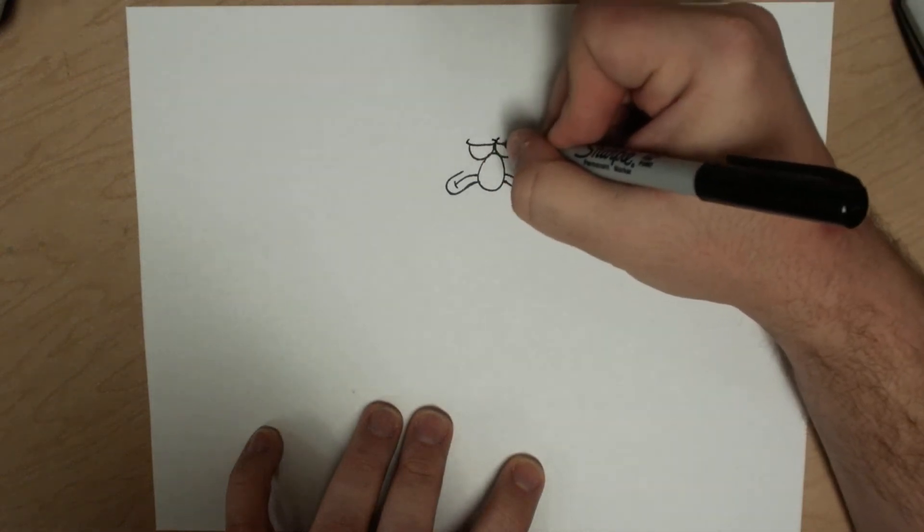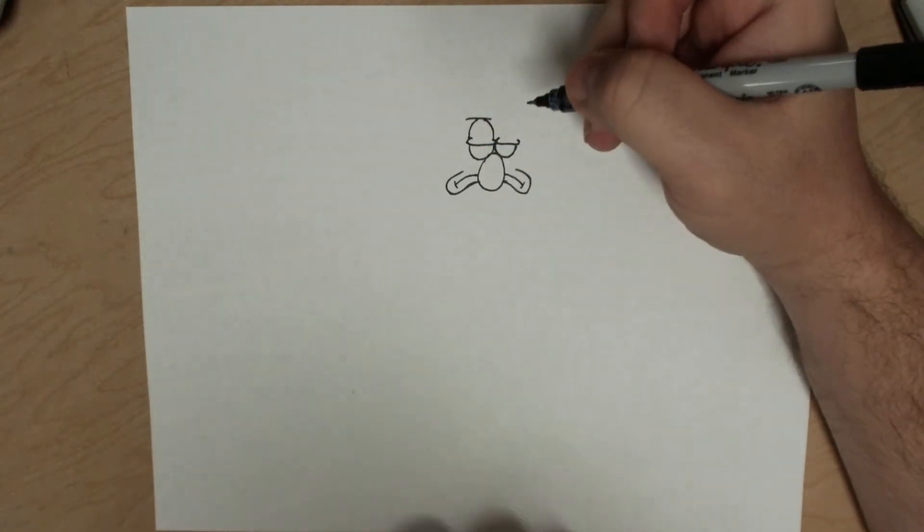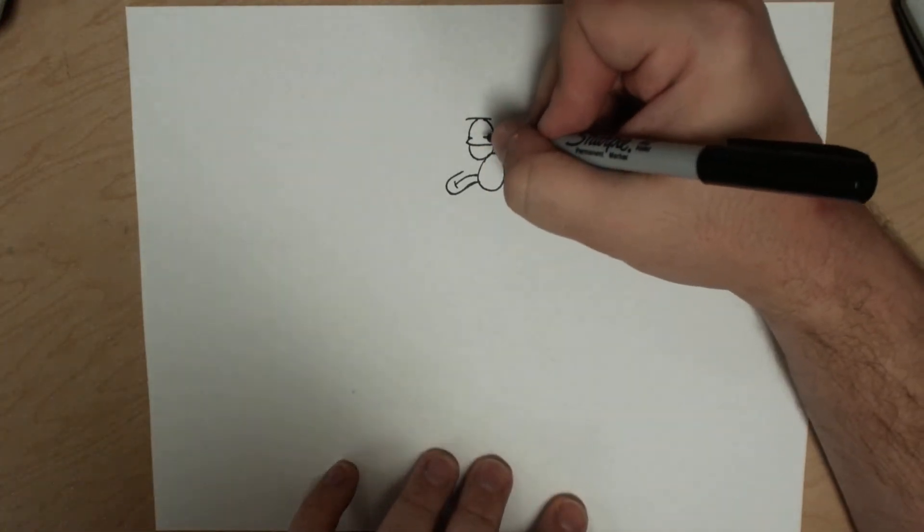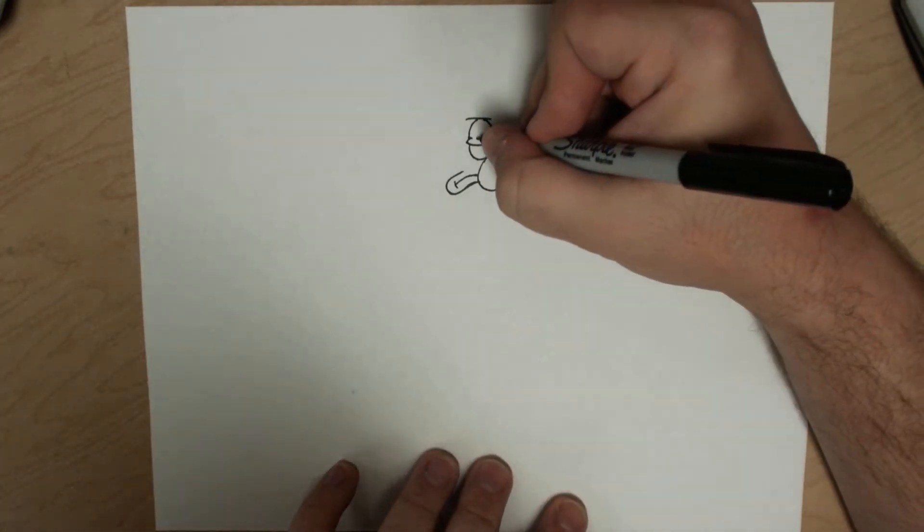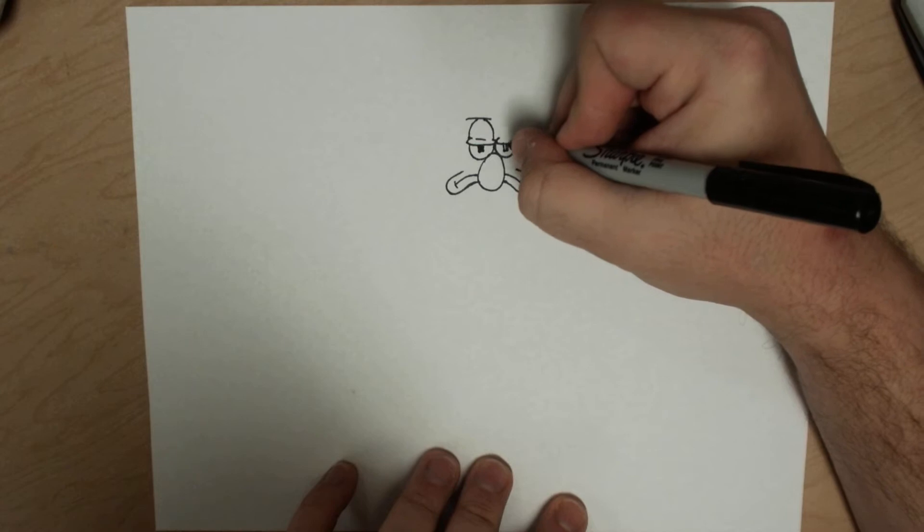And then let's get the eyes in here. Do like this, almost like a W. Looks a little weird. It'll work. Do a little curve, another little curve.